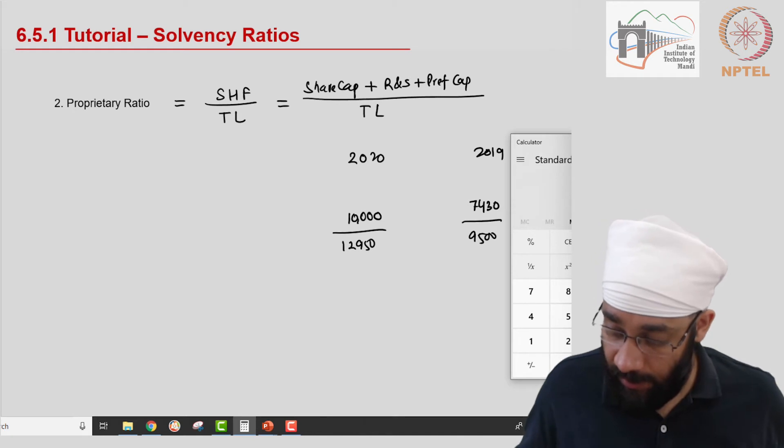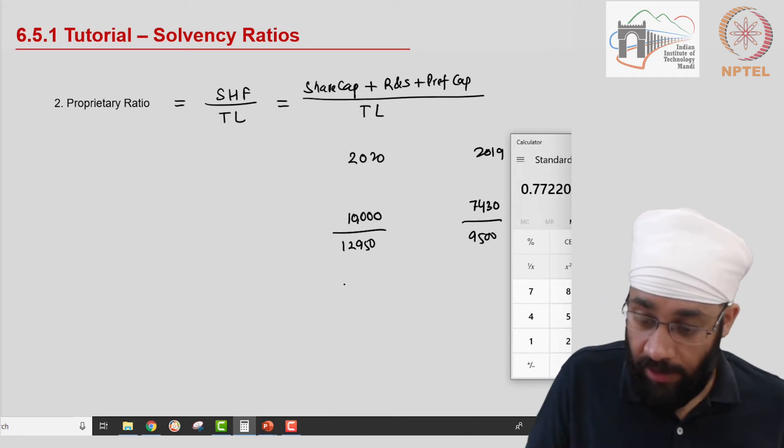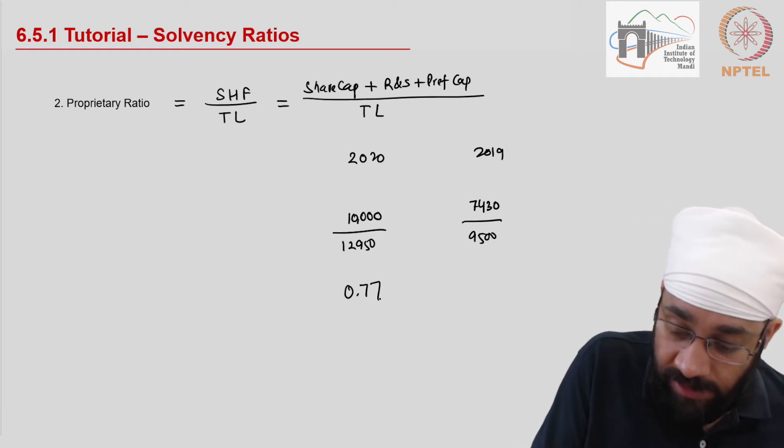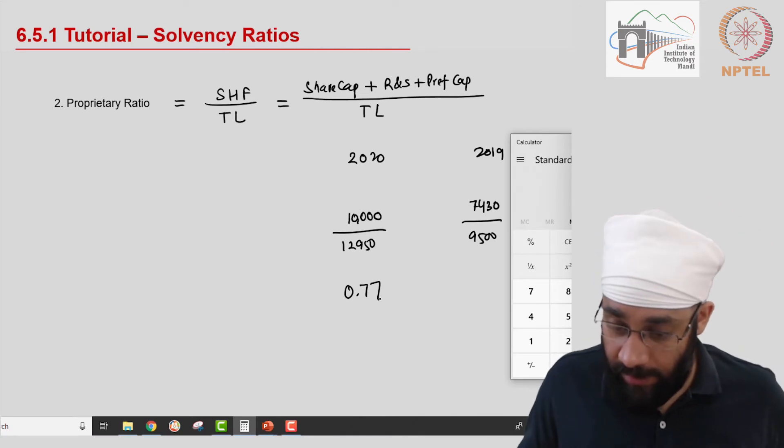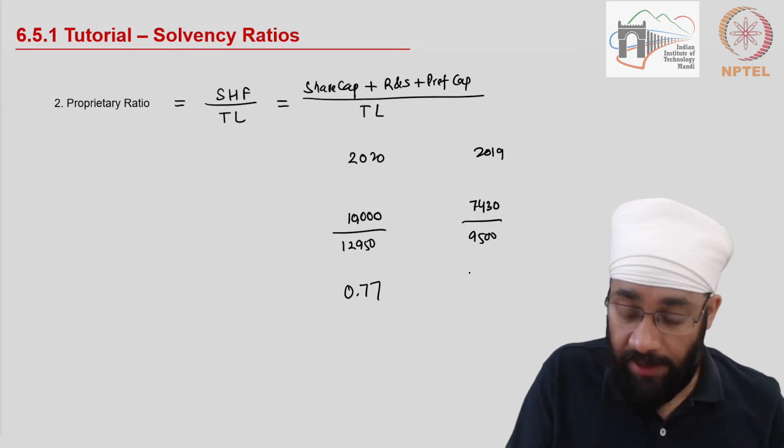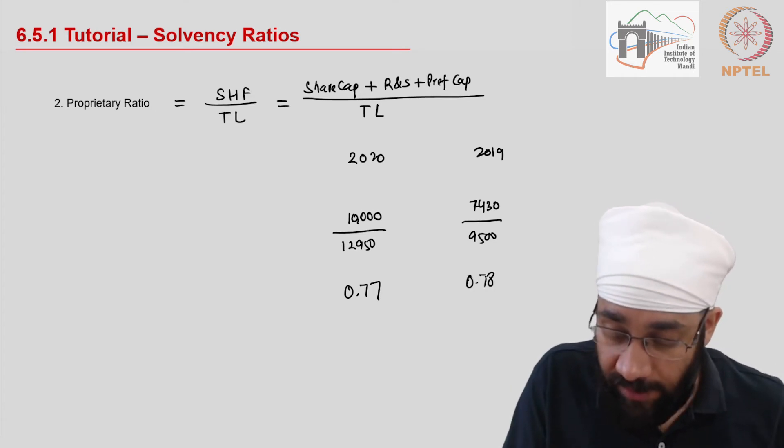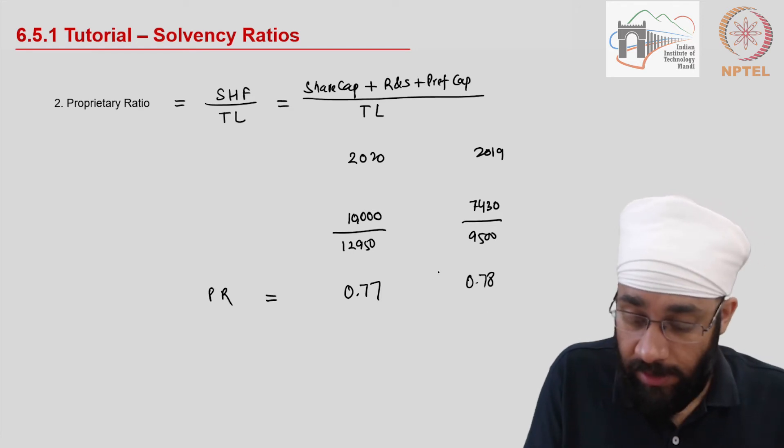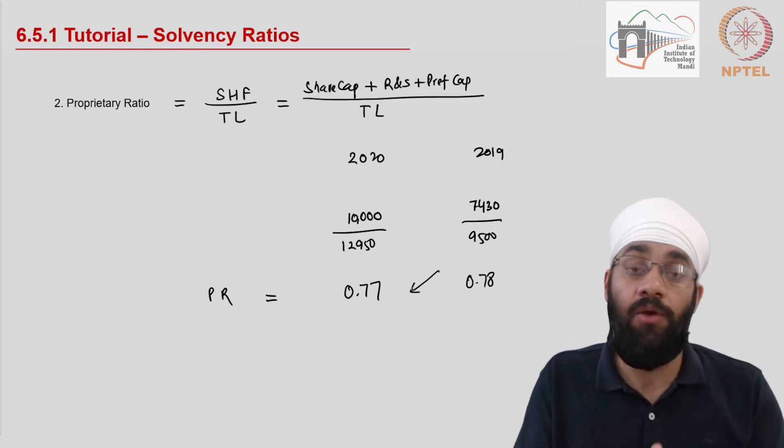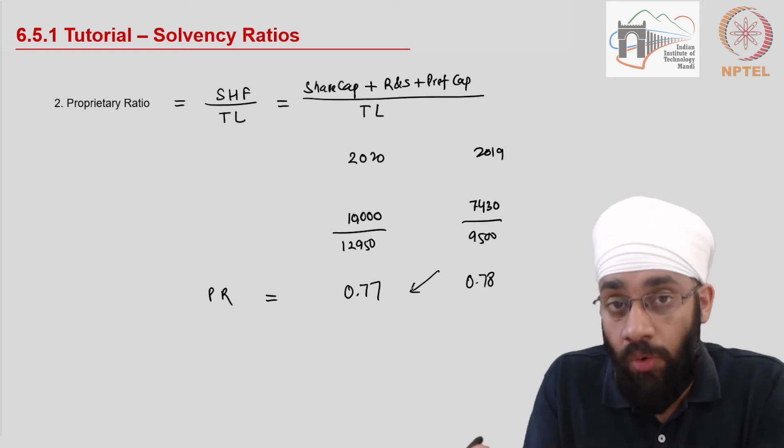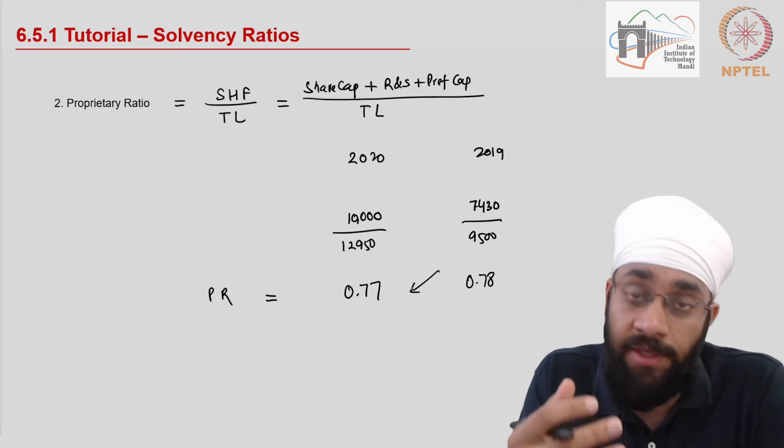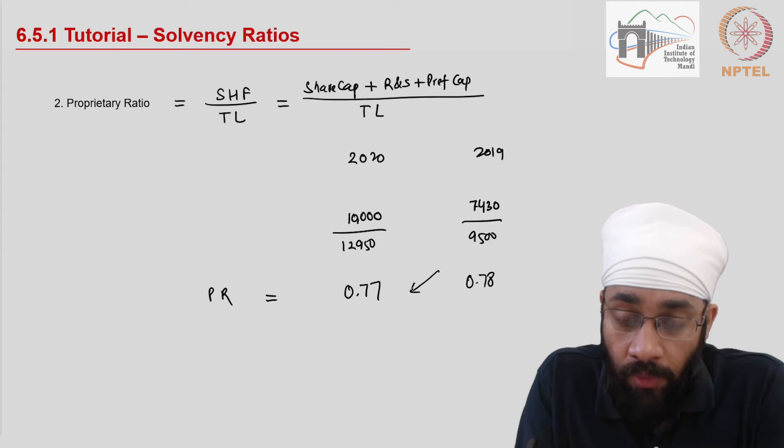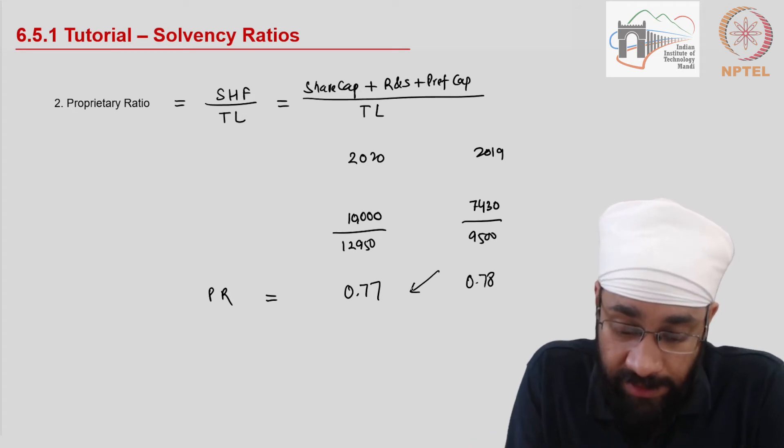So I have 10000 divided by 12950 which is 0.77, and then I have 7430 divided by 9500 which gives me 0.78. So the proprietary ratio is going down, meaning the contribution of the shareholders in the total funds invested in the business has gone down by 1% in this year.